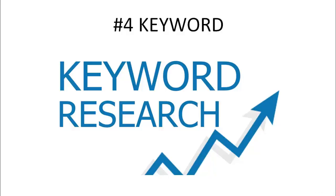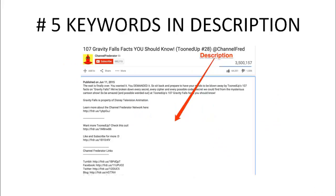Links are important in the description box, and putting keywords in the description box is equally important. The description box is not complete with a link alone — it is fulfilled by adding the right keywords. Make sure to write at least 300 words in the description box with your keywords and links added naturally. It automatically increases the chance of video search engine optimization.